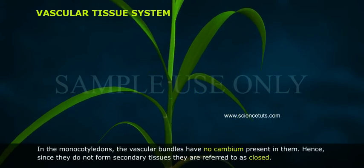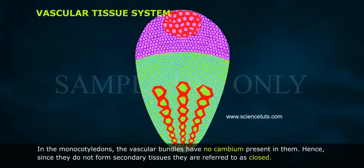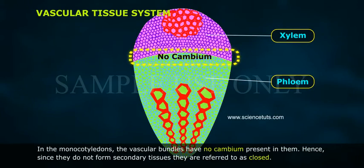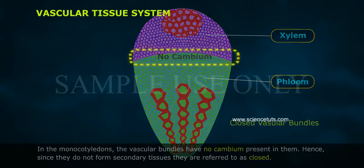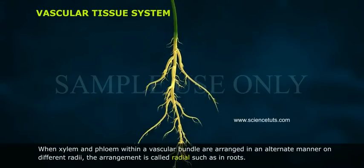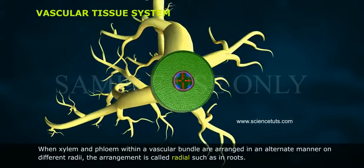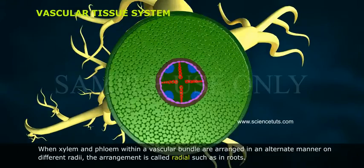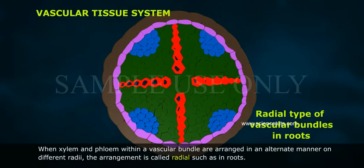In monocotyledons, the vascular bundles have no cambium present in them. Hence, since they do not form secondary tissues, they are referred to as closed. When xylem and phloem within a vascular bundle are arranged in an alternate manner on different radii, the arrangement is called radial, such as in roots.